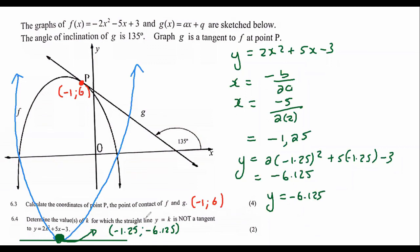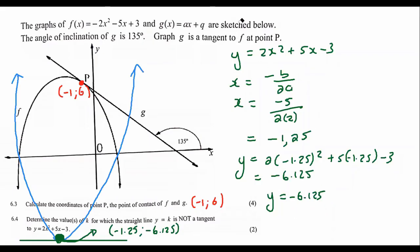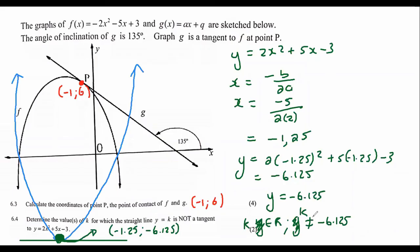But they said determine the value of K for which the straight line is not a tangent. So K can be any number except this number, because when it equals that number it is a tangent. Mathematically, K is an element of the real numbers and K should not equal negative 6.125.